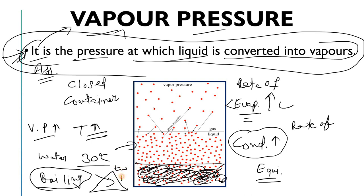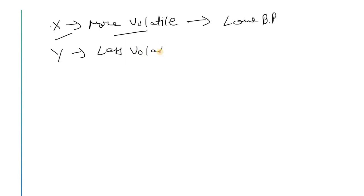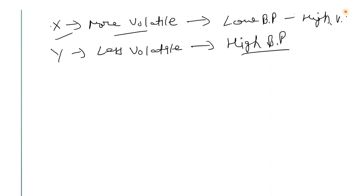Also consider volatility. If a material X is described as more volatile, it means its boiling point is low, which corresponds to a high vapor pressure. If a material is described as less volatile, it has a high boiling point and a low vapor pressure. So: more volatile means high vapor pressure, and less volatile means low vapor pressure.